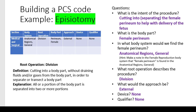What would the approach be? It would be external because the doctor can see the female perineum. He doesn't need a scope or any kind of visual tool — he can see it without any assistance. There's no device or qualifier that we know of, and as I mentioned earlier, we would have to get to the table to see if there were even any options. When we get to the Med-Surg anatomical regions general table with division as your root operation, there are no options for device or qualifier. So they are Z at this point.